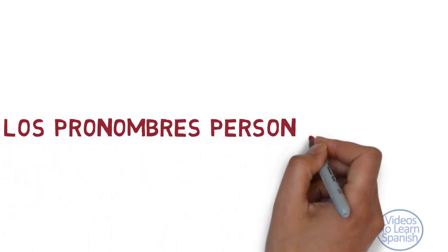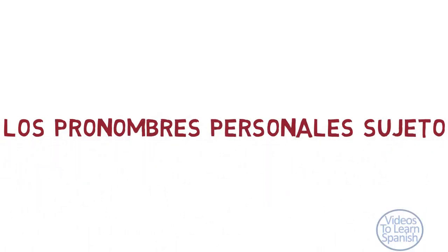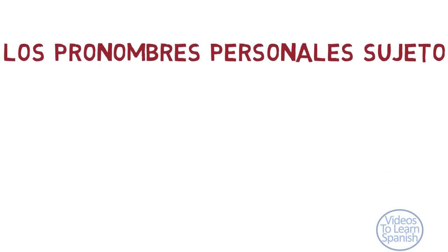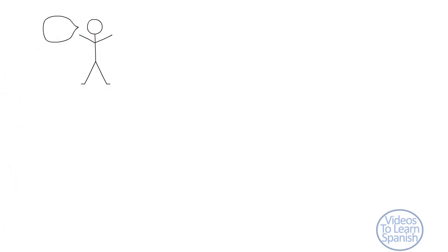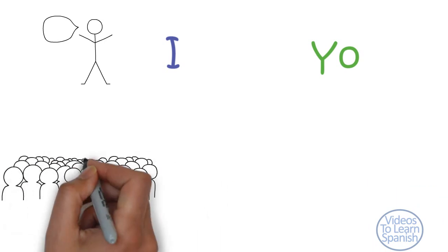Los pronombres personales sujeto, personal pronouns. When the speaker is involved in the verb's action, there are two forms in English. The singular one is I, whose equivalent is yo in Spanish.